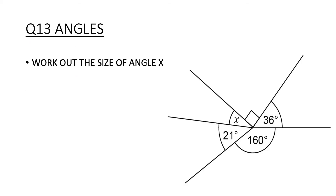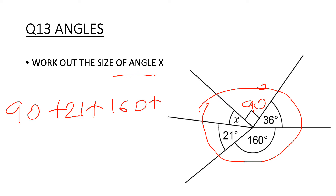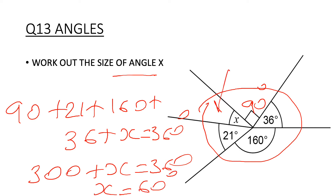Question 13: work out the size of angle x. Angles around a point add up to 360°. We have 90° (a right angle), plus 21°, plus 160°, plus 36°, plus x = 360°. That gives 300° + x = 360°, so x = 60°. I believe this question was worth three or four marks.